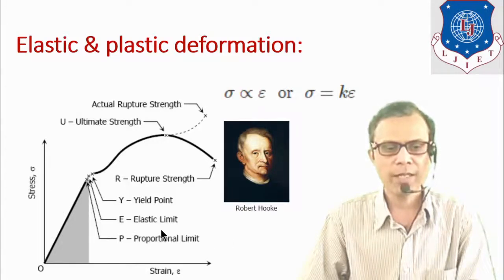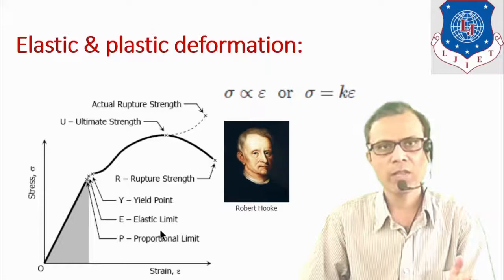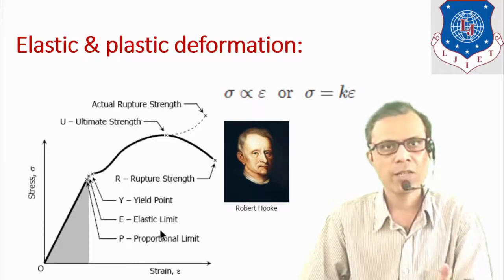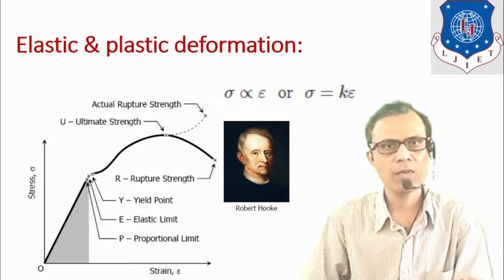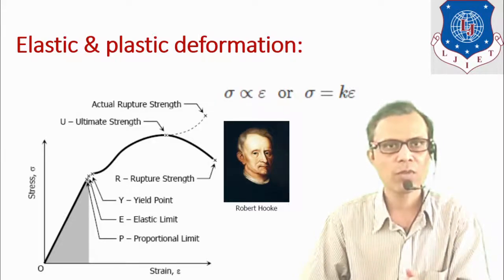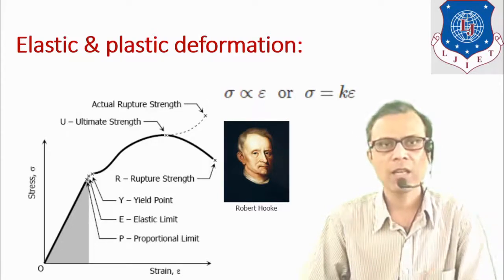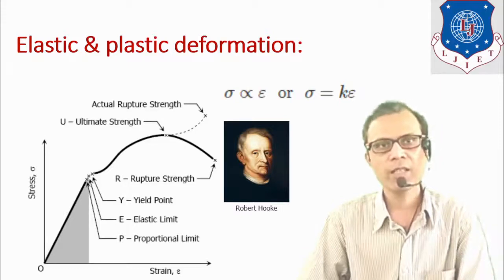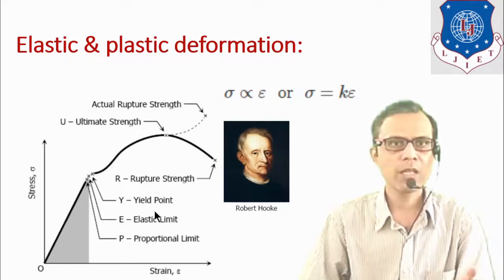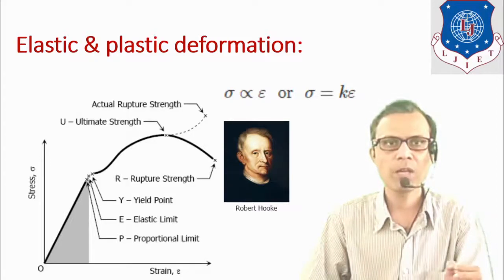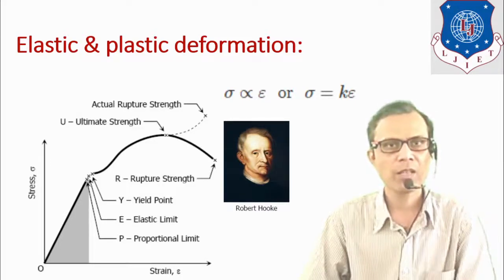Point E is the elastic limit — up to point E there will be elastic deformation. Point Y is the yield point of the material, which is the maximum elastic strength up to which we can apply external force and keep the material within the elastic limit. Further, if we increase the stress beyond the yield point, there will be plastic deformation, resulting in a permanent change in shape and size.